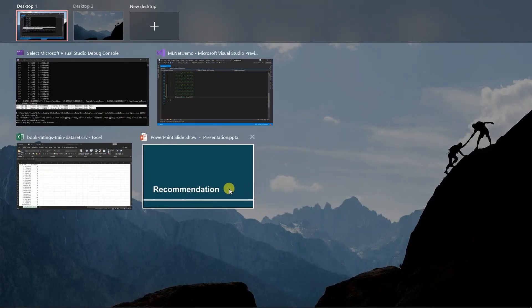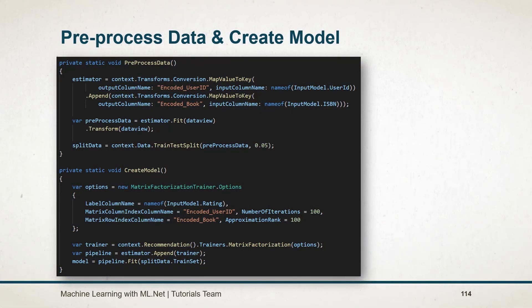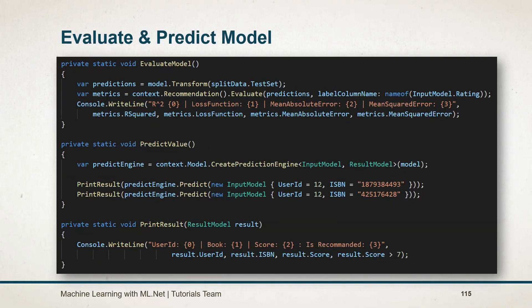Let's review what we learned in this session. For recommendation, we need to add the additional NuGet package Microsoft.ML.Recommender. First, we created the pipeline for preprocessing the data — we encoded the values for User ID and book ISBN, then transformed the data view with the estimator. For the model, we used the matrix factorization trainer, specifying the matrix column and row index column names, as well as the number of iterations and approximation rank. Note that recommendation is not a built-in catalog for the ML context, so it uses an extension method. Model evaluation and prediction are done in the normal way. Goodbye.